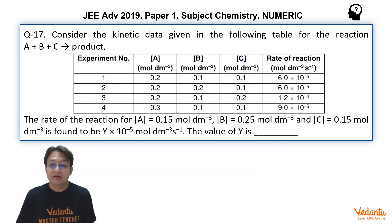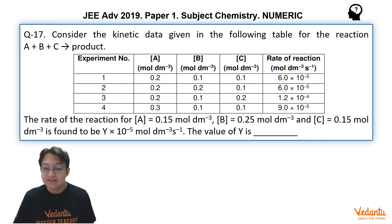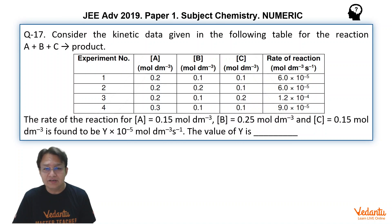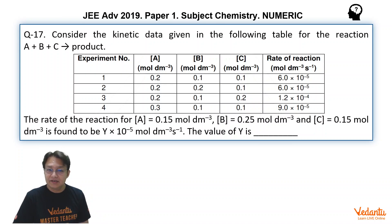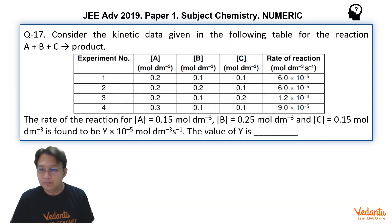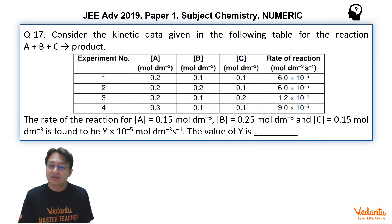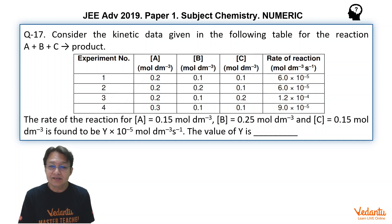Since upon doubling the concentration of C the rate is also doubling, the order with respect to C is 1. Similarly, in the fourth experiment, the concentration of A is changed to 0.3, while B and C remain at 0.1. The concentration of A changes from 0.2 to 0.3, and the rate goes from 6 into 10 to the power of minus 5 to 9 into 10 to the power of minus 5. So the ratio 2 to 3 matches 6 to 9, which means it is following a first-order process with respect to A.